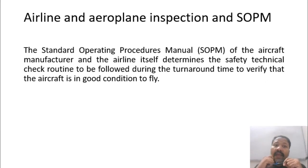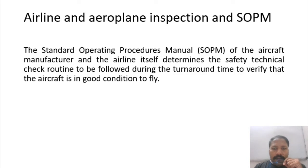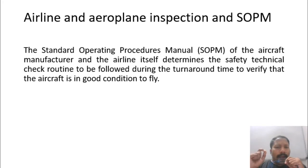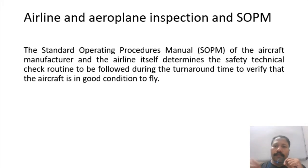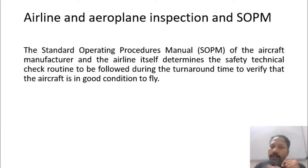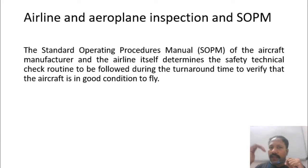Step five: safety inspection. The airline conducts standard operating measures to ensure the aircraft is safe to fly. Unfortunately, in the past, certain standard operating measures were not followed, leading to damage, crashes, or major incidents. The crew or person in charge inspects the vehicle thoroughly. The standard operating procedure manual of the aircraft manufacturer determines the safety checks and verifies whether the aircraft is good to fly.